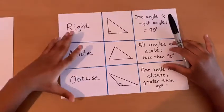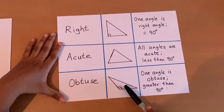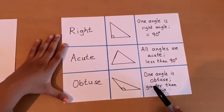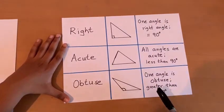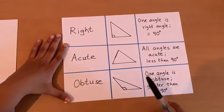Our last triangle is the obtuse triangle. This is what an obtuse triangle looks like. One angle is obtuse. Obtuse means greater than 90 degrees. We can clearly see here that this angle is obtuse.